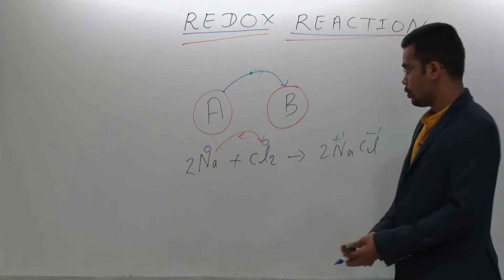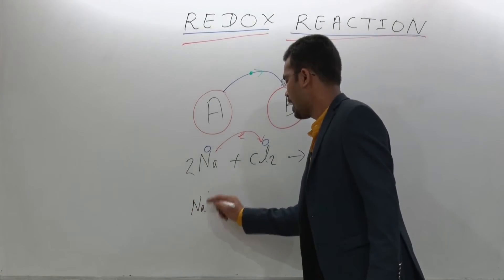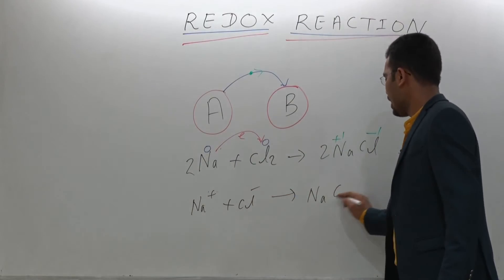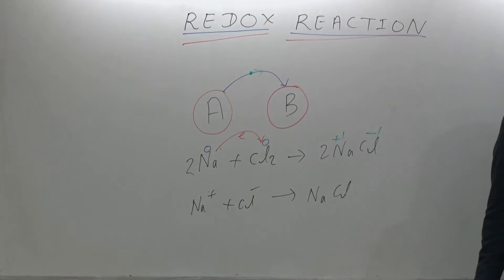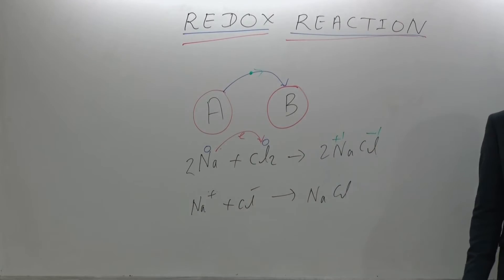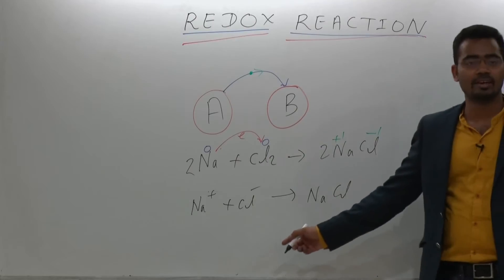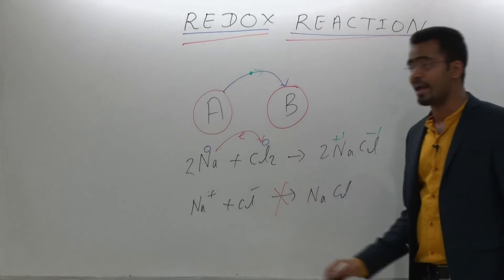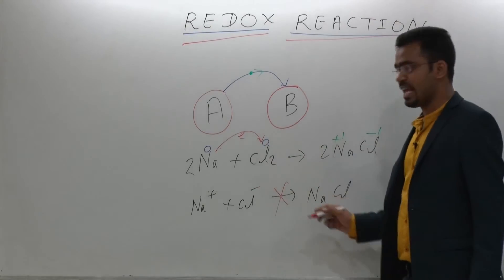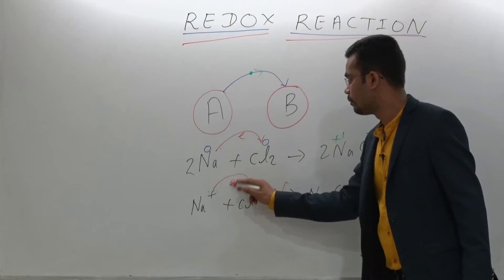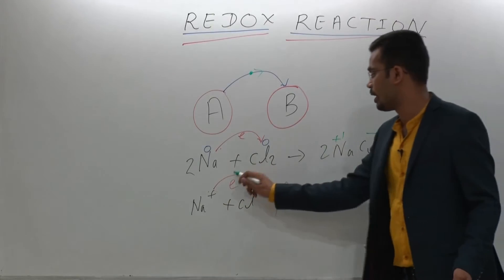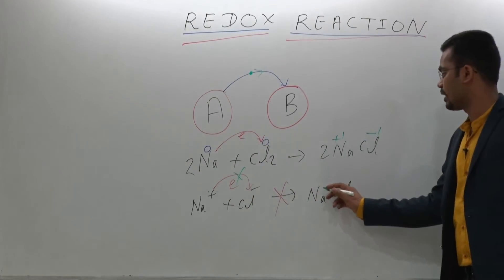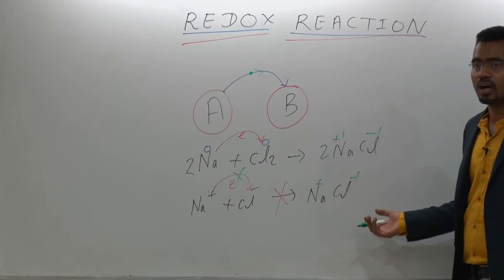Give me another example. If we have Na+ plus Cl- forming NaCl — tell me, is it a redox reaction or not? 99 percent of people will say it is a redox reaction, but it is NOT a redox reaction. Why? Because during this reaction there is no movement of electrons. Na already has plus charge and Cl already has minus charge, so there is no movement of electrons.